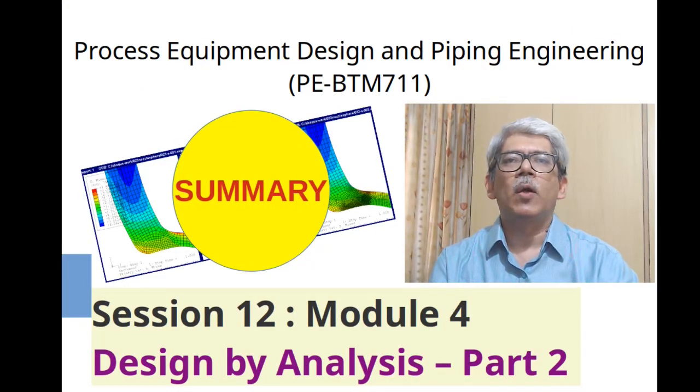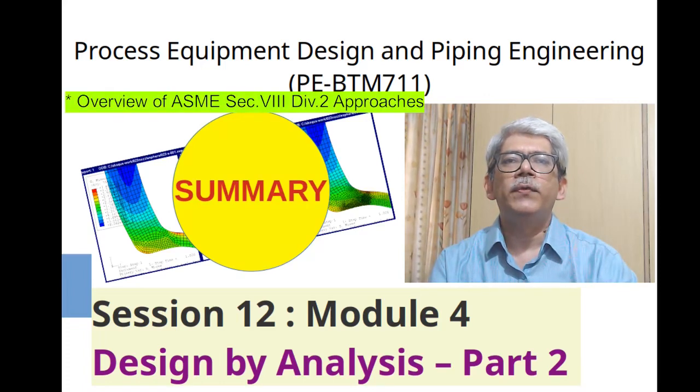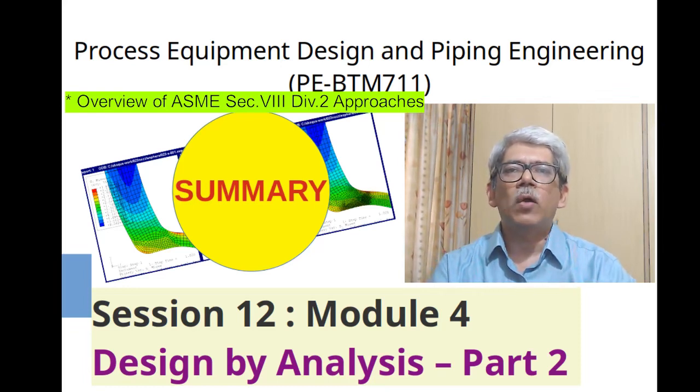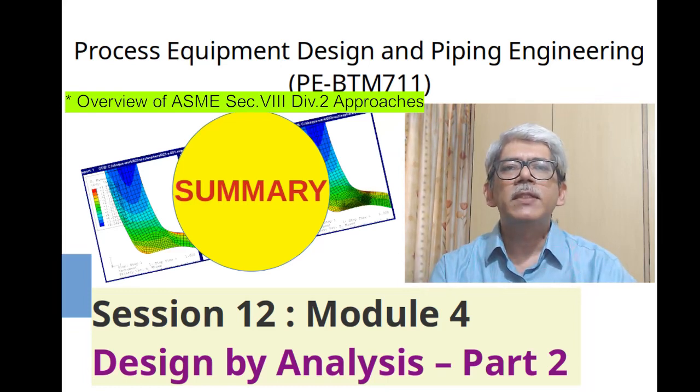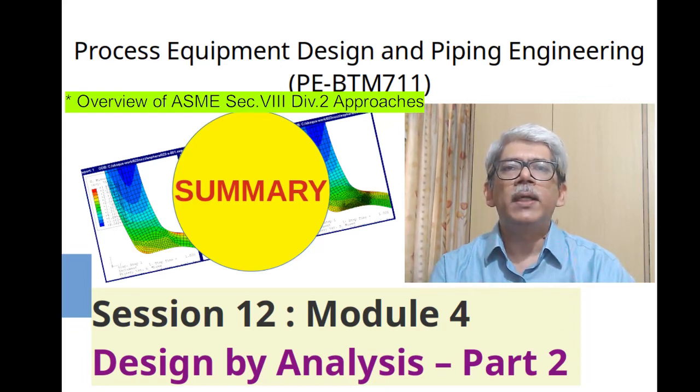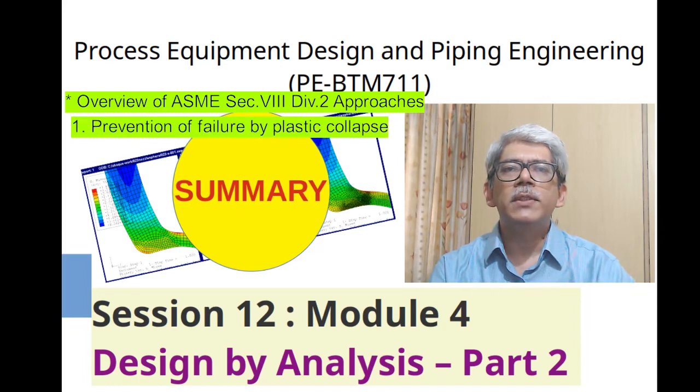Let me summarize the topics covered in this session. We started with an overview of different approaches provided in ASME Section 8 Division 2 for conducting design by analysis of pressure components. We have seen that there are four mandatory checks to prevent failure against corresponding modes of failure. The check to prevent failure by plastic collapse wherein the entire vessel cross section may fail leading to catastrophic failure of the equipment is checked first.